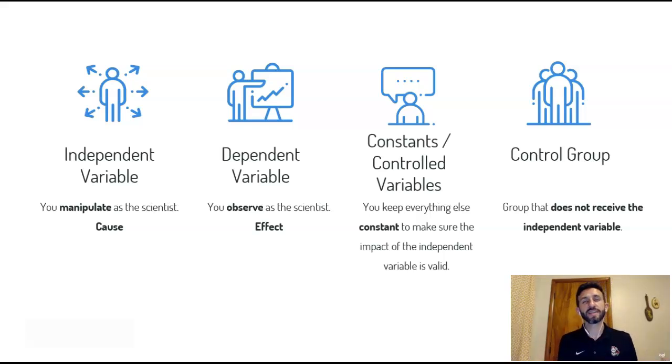In any scientific experiment, there will be lots of constants or controlled variables. That means that you keep everything else constant or the same except for the independent variable. And then also a lot of times you have a control group, which is a group that does not receive the independent variable to make sure that any changes that you see in the dependent variable are not random changes or caused by something else that you're not thinking about.